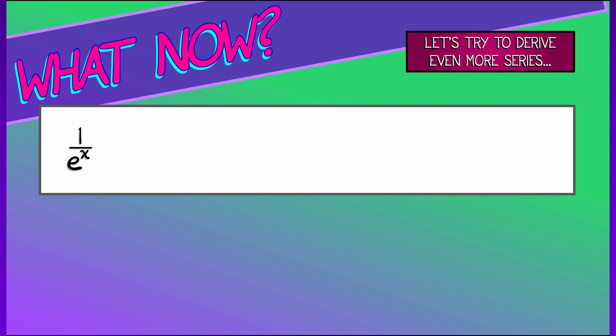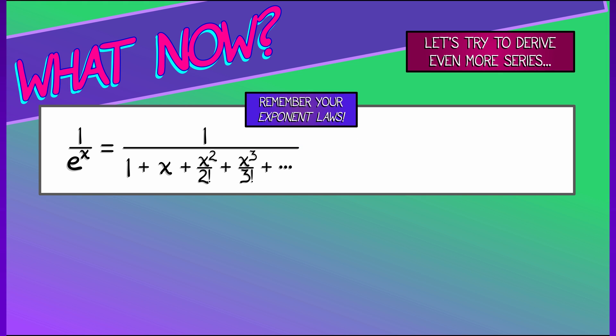For example, what is 1 over e to the x? If I just write down what that literally is, it is 1 divided by 1 plus x plus x squared over 2 factorial plus x cubed over 3 factorial. Now, this is kind of complicated. In particular, it is not a series. It is not a long polynomial. It's got that guy in the reciprocal. That's no good. Oh, wait a minute. If we remember our exponent laws, we can get somewhere.